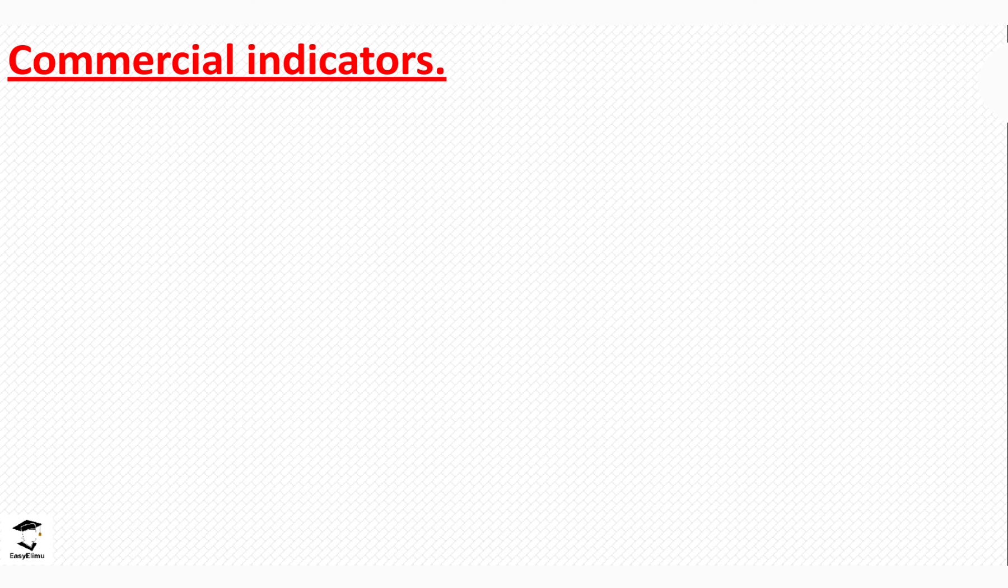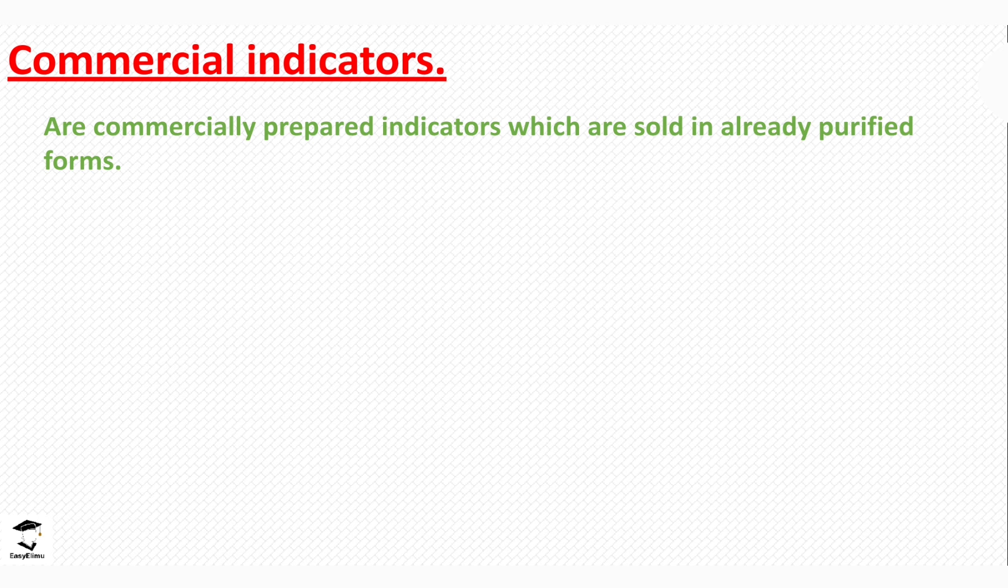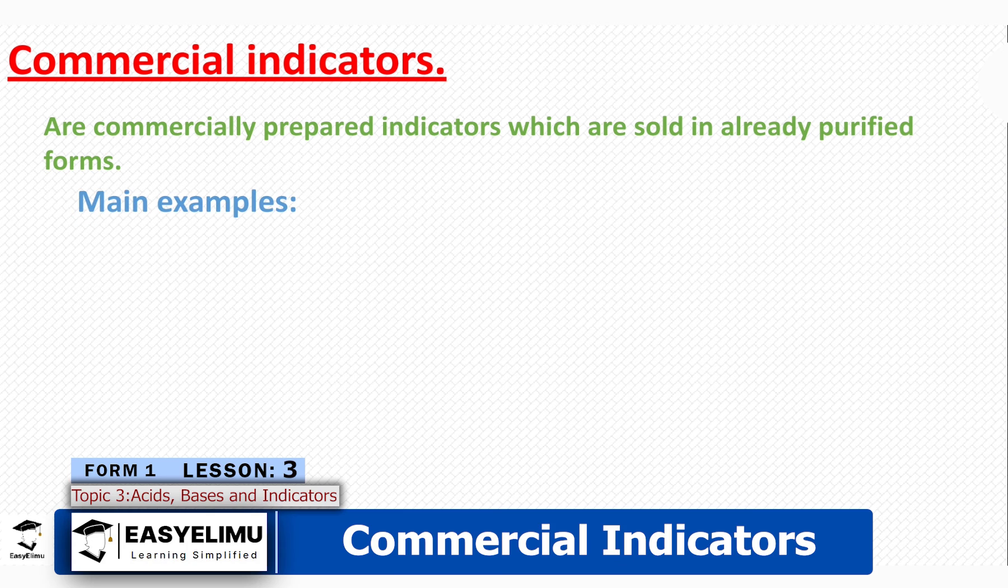What are commercial indicators? Commercial indicators are indicators produced in industries and are sold in already purified forms. They can also be stored in the lab.